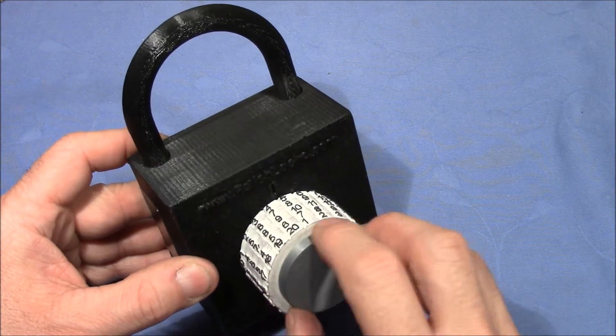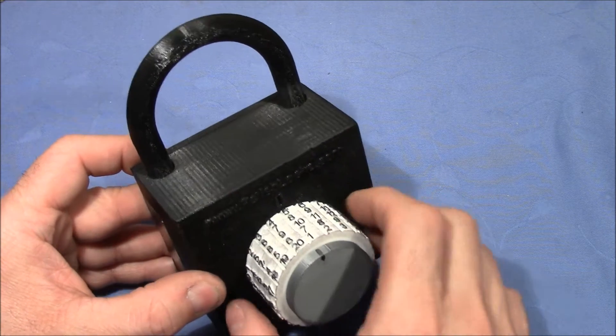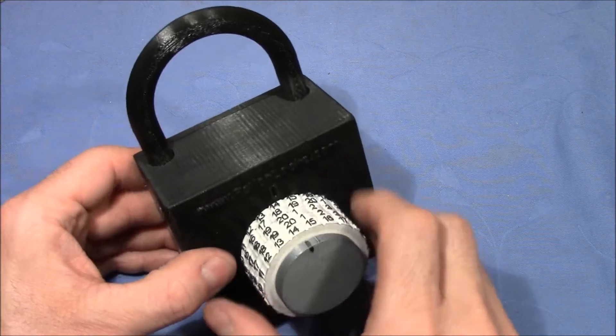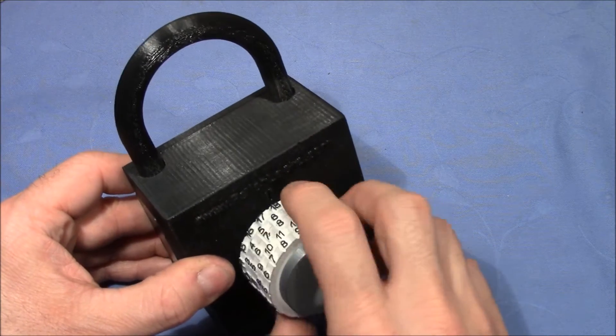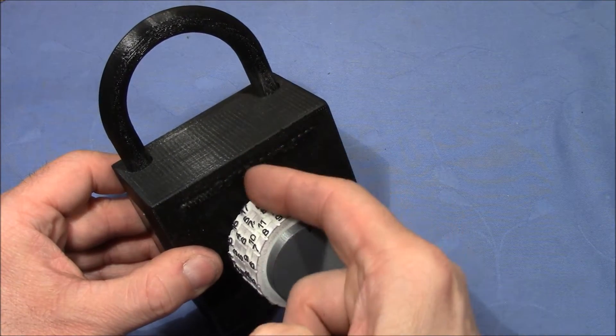So here we have 5 rings with 20 numbers on each and we can turn them to the left quite easily and not so easy to the right because then the knob turns along.